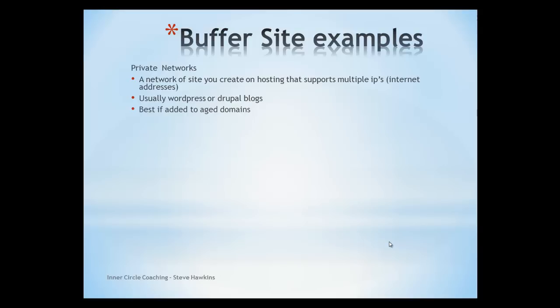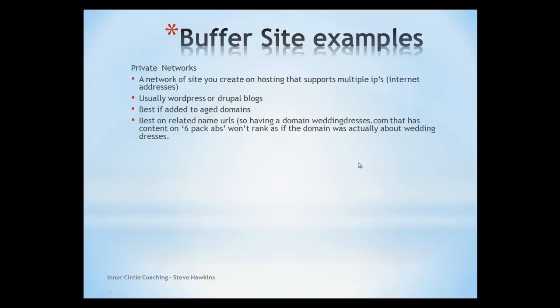It also works best if we are using aged domains — that's domains that are at least a year old. But if you can get domains that are 5 or 10 years old, then these will perform better and quicker than new domains. It's also best to use a related name URL. So for example, if we have a domain called WeddingDresses.com and we put on an article on six pack abs, then as the content isn't related to the domain, this won't rank as well as if we were actually using articles on wedding dresses.